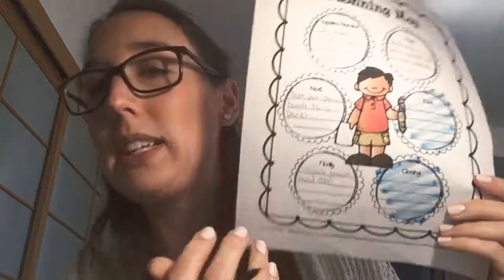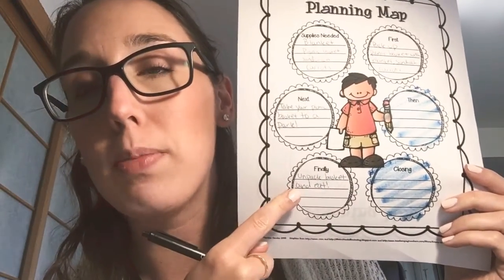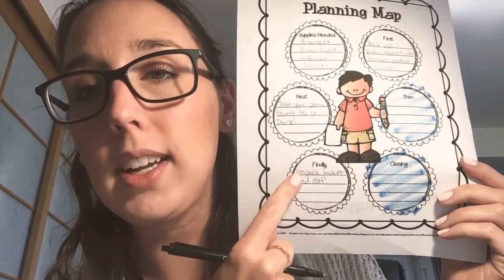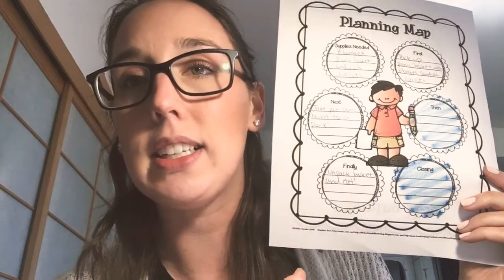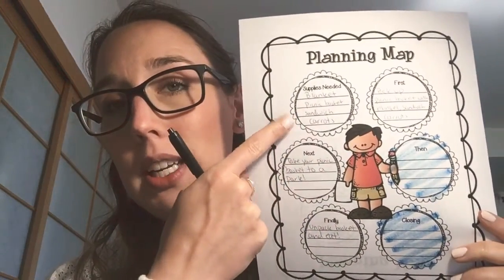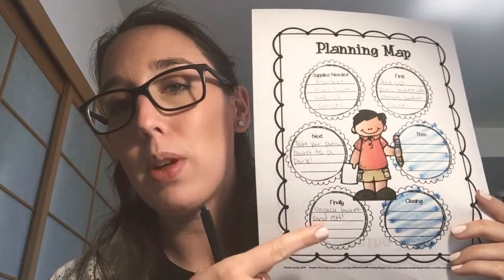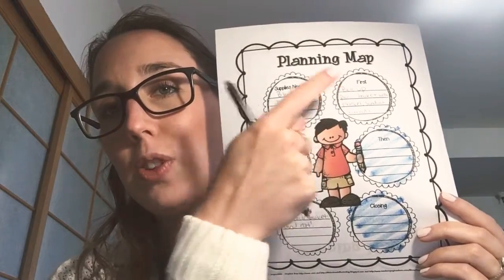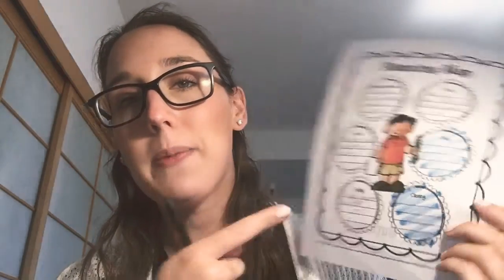I didn't do a full complete sentence because these are small bubbles, but that's okay. So we did our supplies that we need, first step, second step, third step — supplies, first, next, finally.